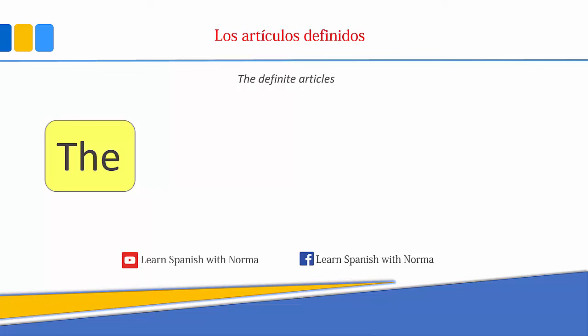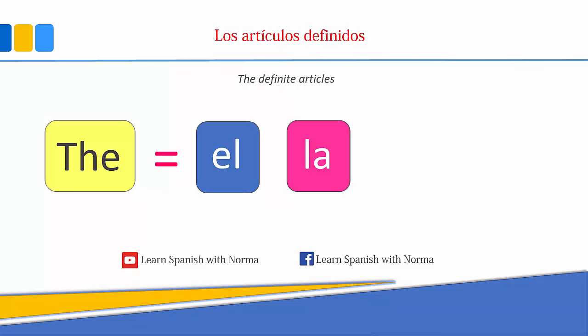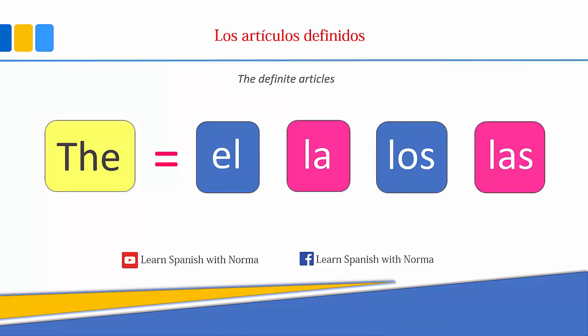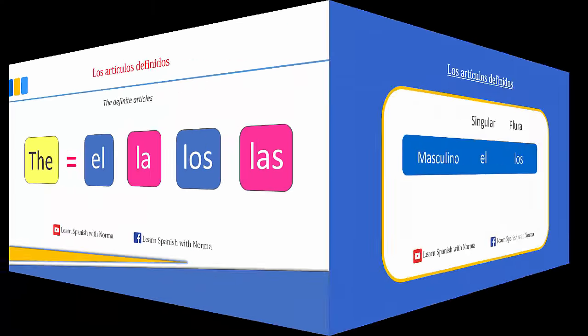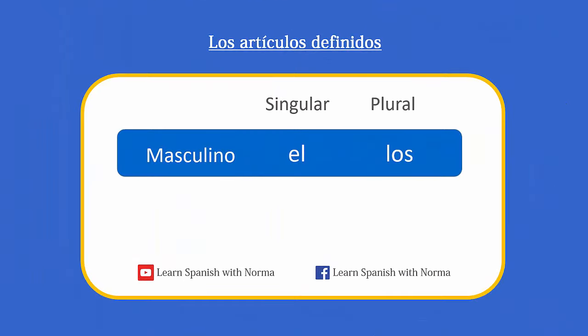English has only one definite article, but in Spanish the definite articles are: el, la, los, and las. For masculine singular nouns, we use the definite article el. For masculine plural nouns, we use the definite article los.